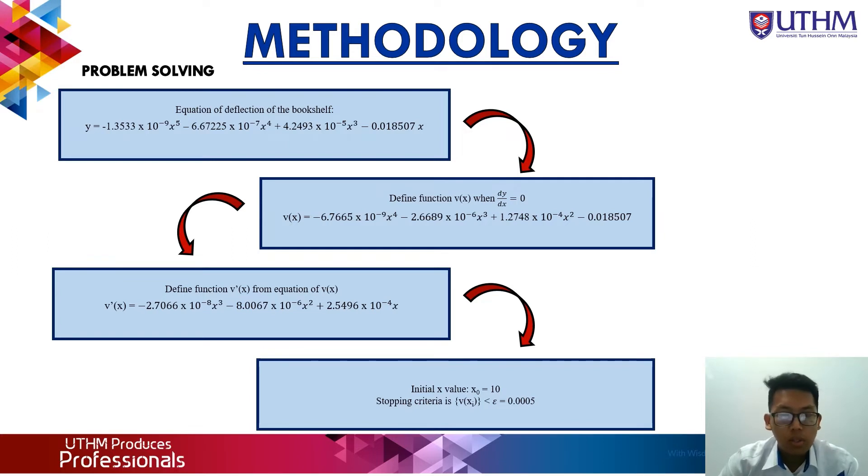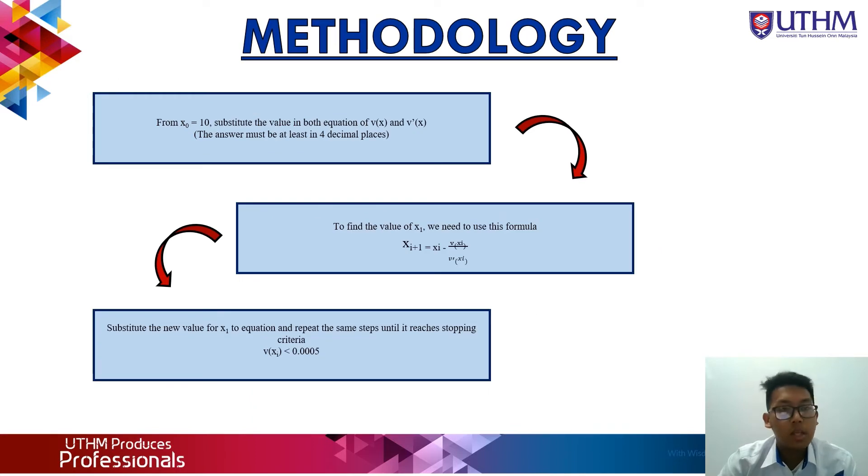Fifth, from x₀ = 10, substitute the value in both equations y(x) and y'(x), and the answer must be at least in four decimal places. Sixth, to find x₁, use the formula x_{i+1} = x_i - f(x_i)/f'(x_i). Lastly, substitute the new value x₁ into the equation and repeat the same step until the stopping criteria f(x_i) < 0.0005.